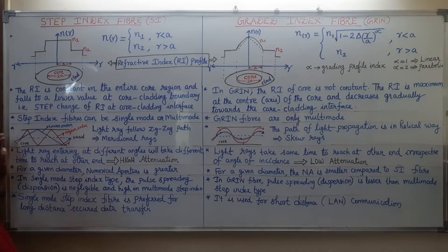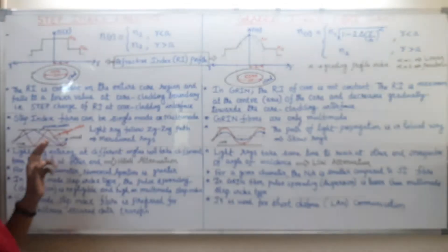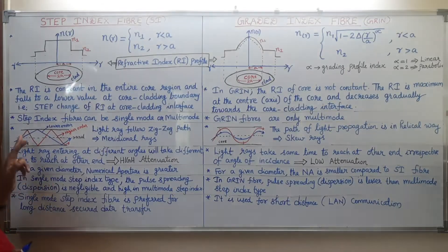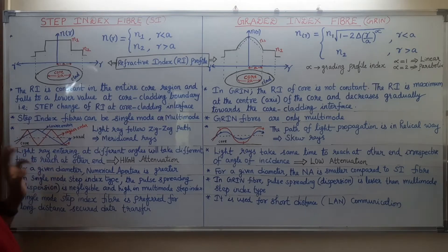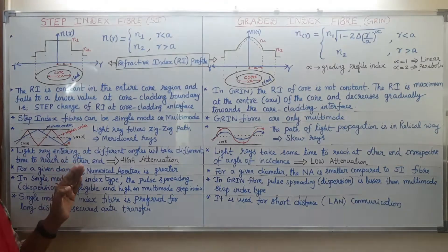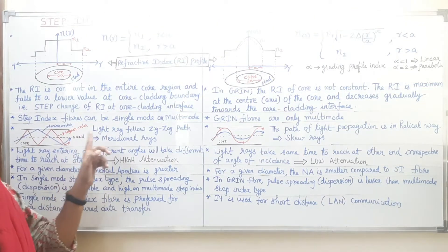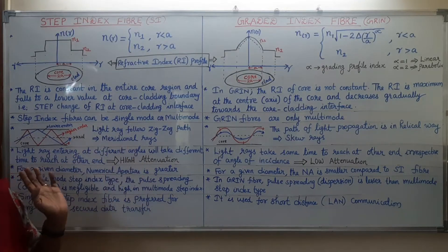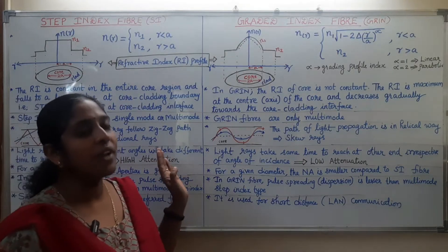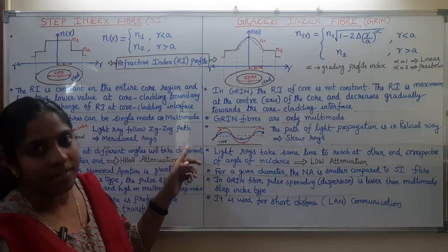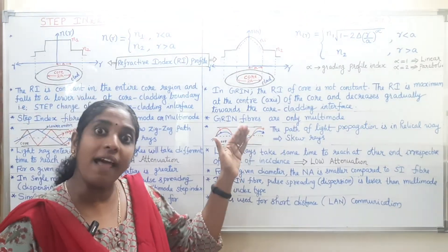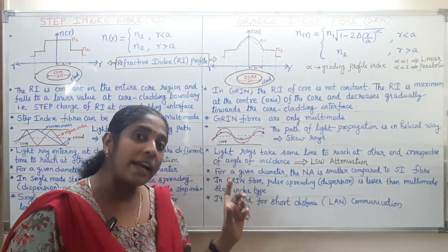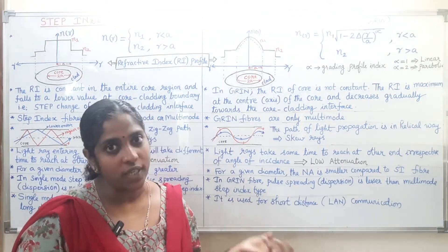In multi-mode step index fiber, a number of light rays propagate following a zigzag path. At the core-cladding boundary they undergo total internal reflection and follow a zigzag path, touching the core axis. Such light rays are known as meridional rays.